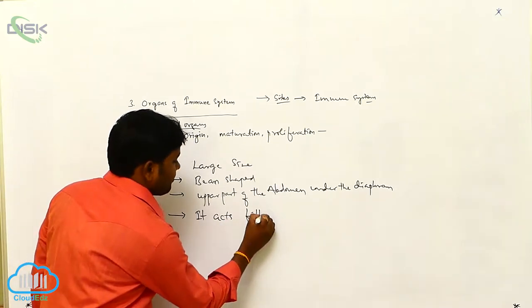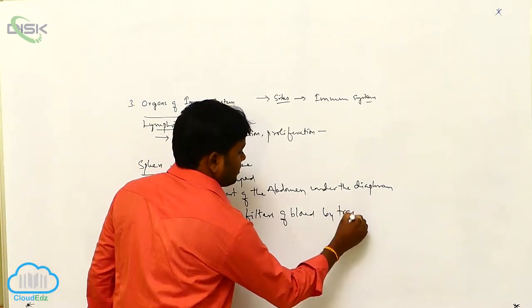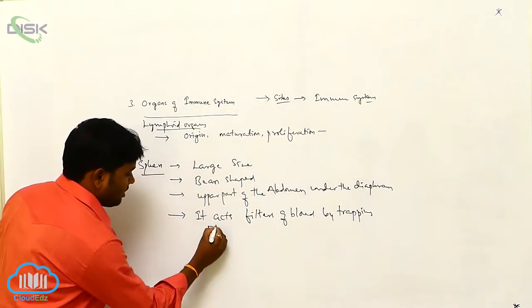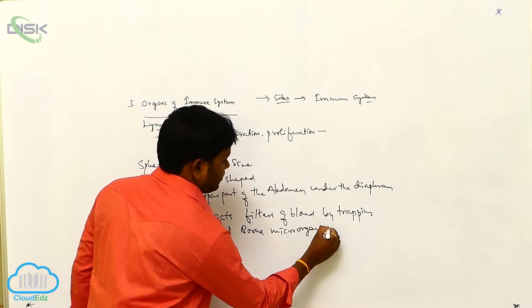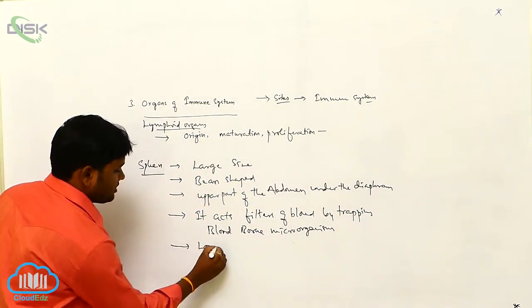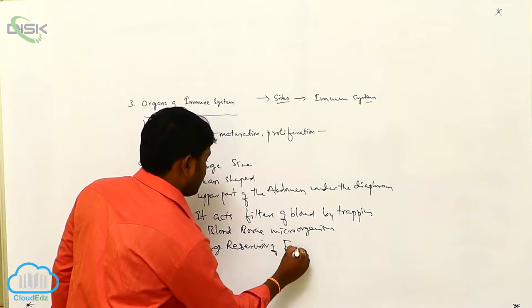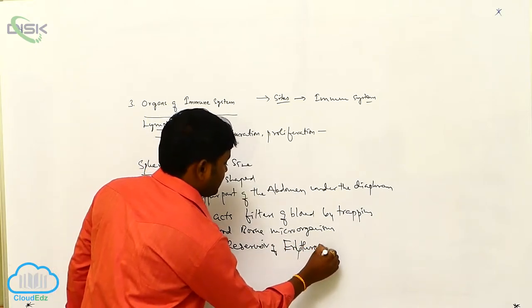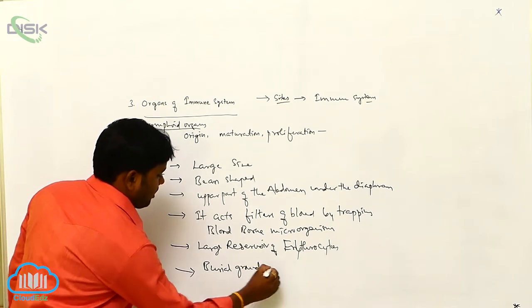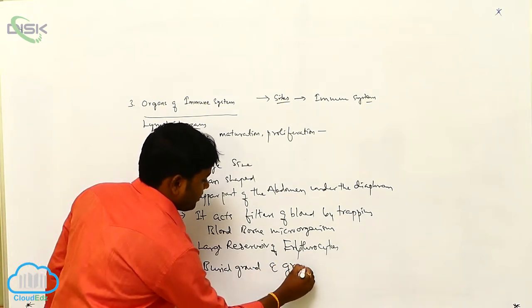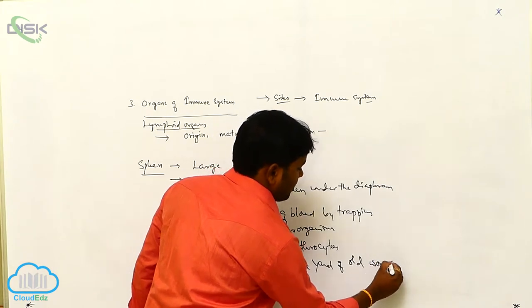It acts as the filter of blood by trapping blood-borne microorganisms, and it acts as a large reservoir of erythrocytes. It also acts as the burial ground and graveyard of old worn-out erythrocytes.